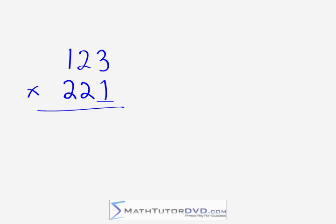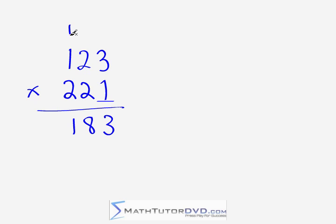Our next problem is 123 times 221. There are no zeros here, so it will be a little more involved but not much harder. Start in the right-hand column: three times one gives three. Next criss-cross: three times two is six, plus two gives eight. Three-way criss-cross: three times two is six, plus one is seven, plus four gives eleven — write a one, carry a one. Leading two-column criss-cross: two times two is four, plus two is six, plus the carry is seven. Leading multiplication: two times one is two. The answer is 27,183.